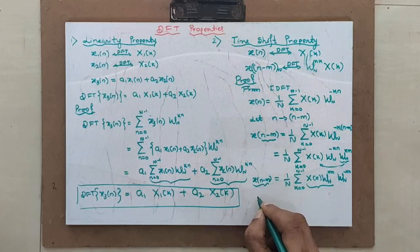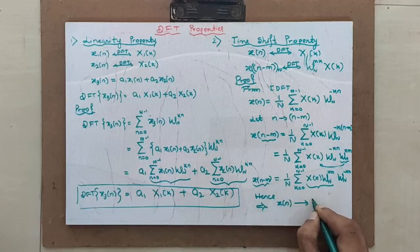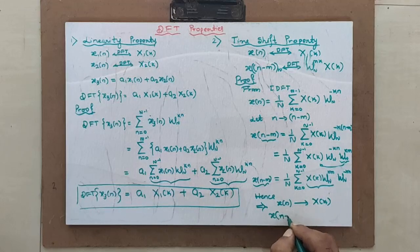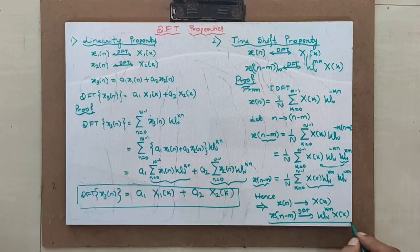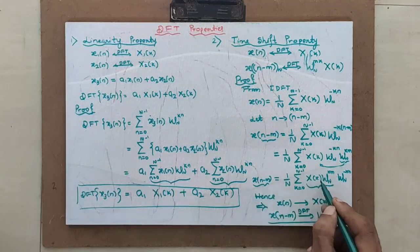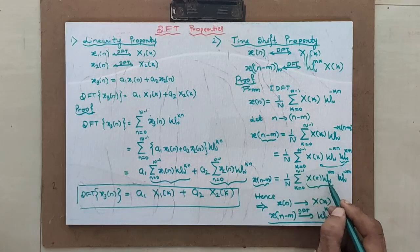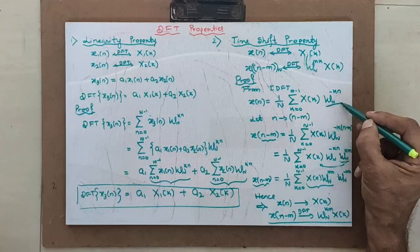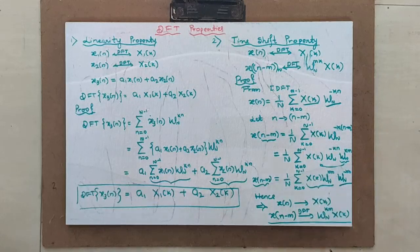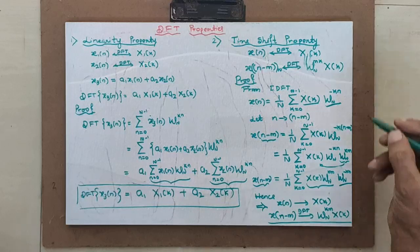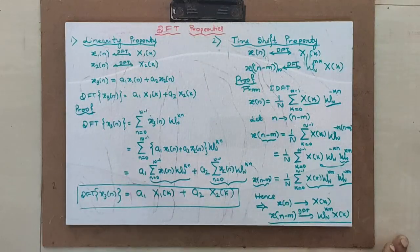Hence it implies that if x(n) has DFT x(k), then x(n-m) will have DFT which is W_N raised to km multiplied by x(k). Instead of x(k) it came out to be W_N^(km)·x(k), with everything else in the same formula. Hence DFT of x(n-m) is W_N^(km)·x(k). This is called the circular time shift property.